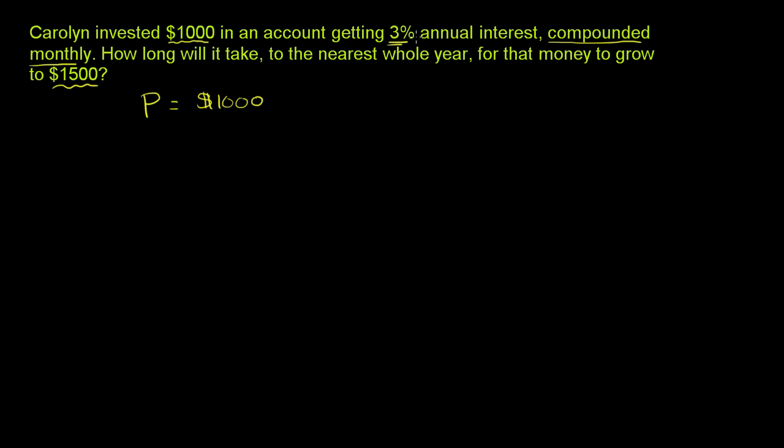When you say 3% annual interest compounded monthly, what they're really saying is that you get one-twelfth of this 3% every month. So the interest rate in question, if we view it on a per month basis, which is actually the relevant time period because it's compounded monthly.